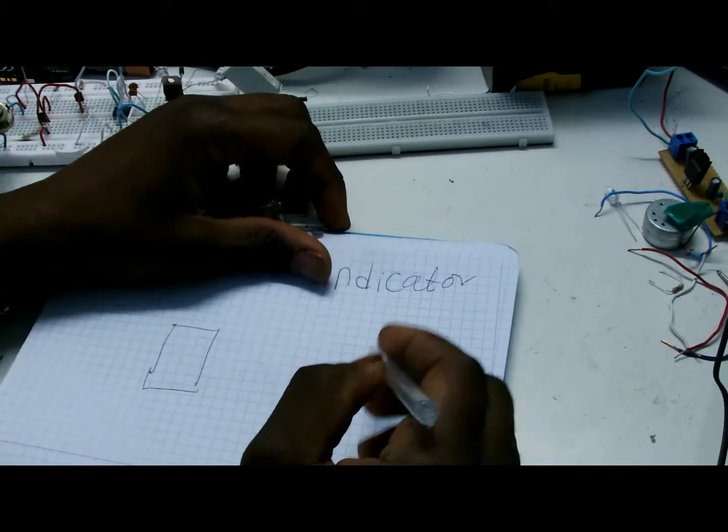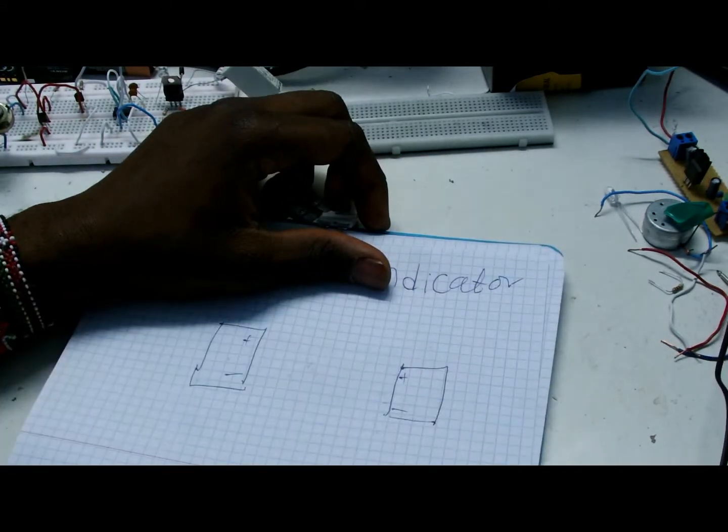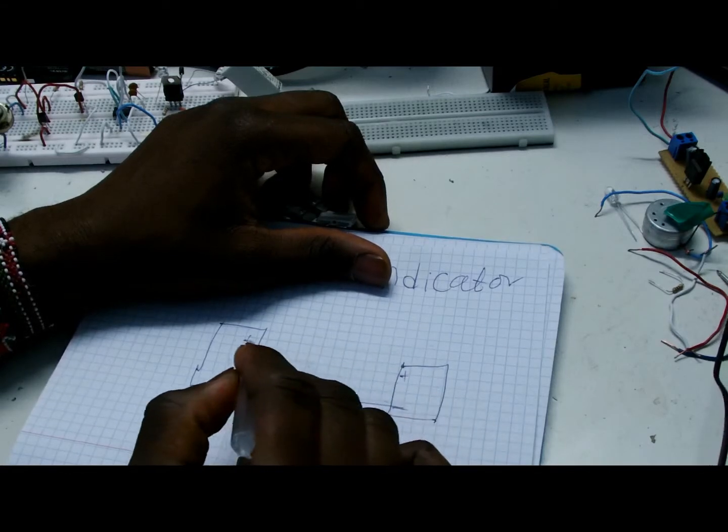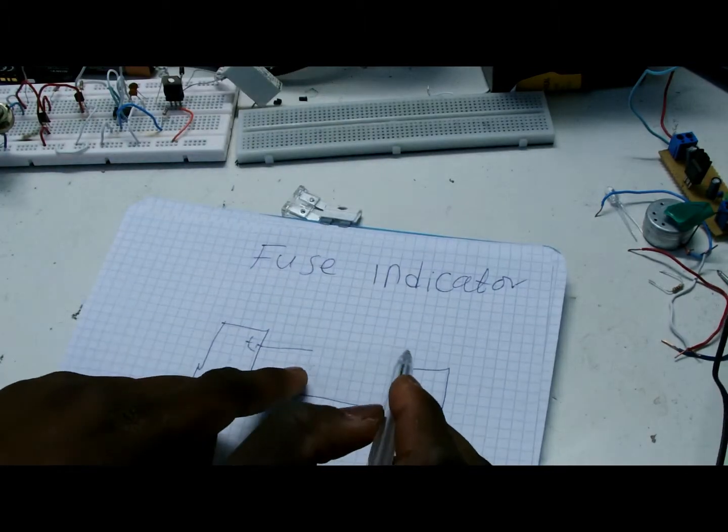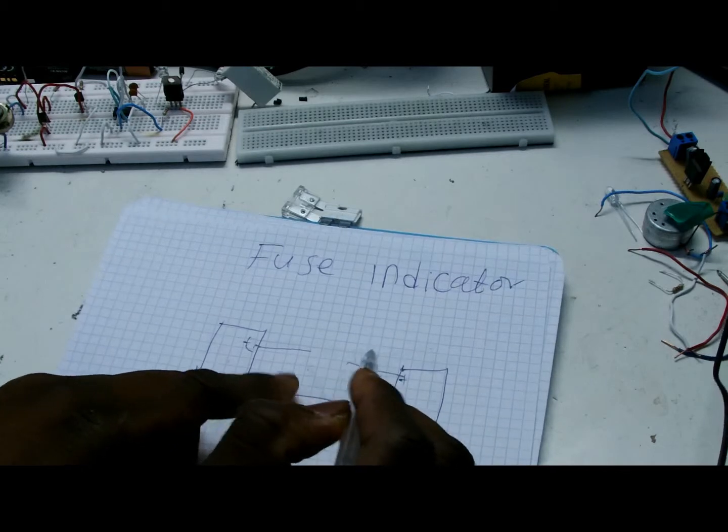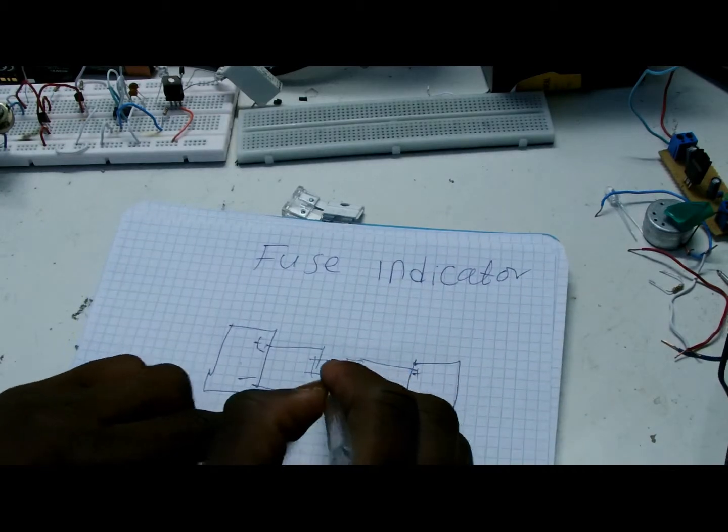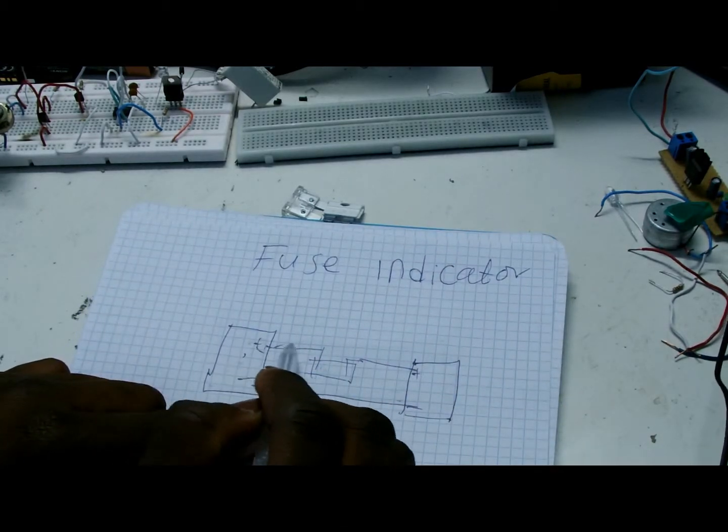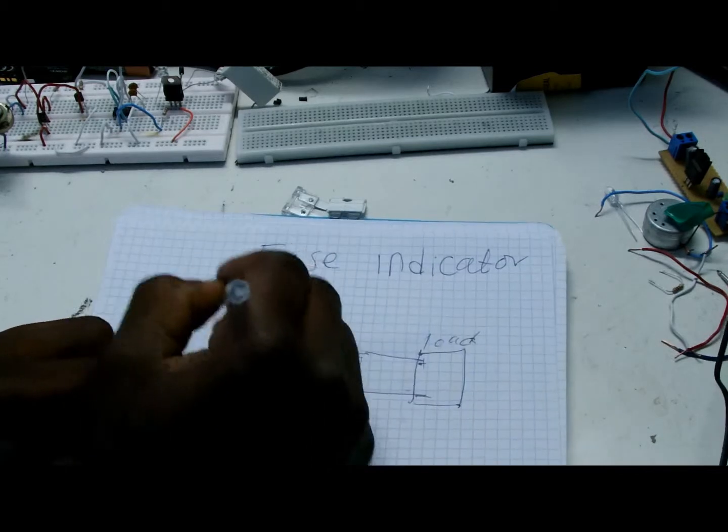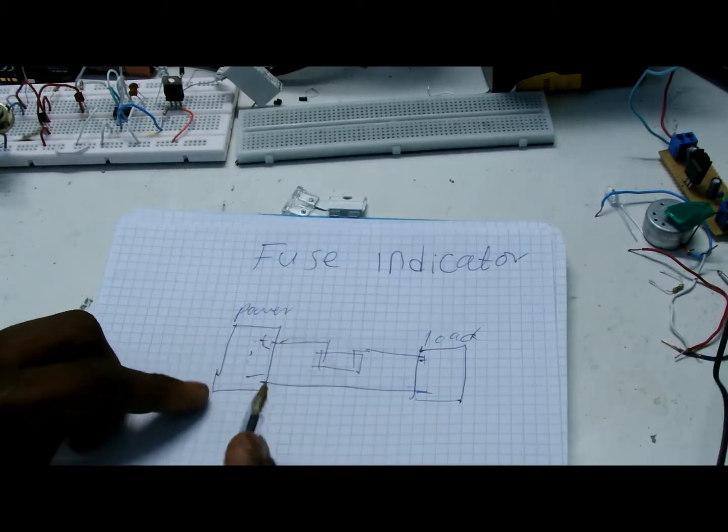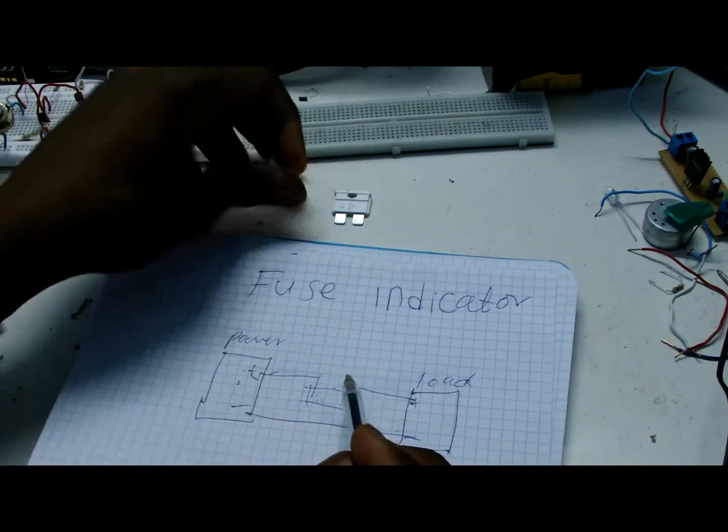We always have power and our load. We have a positive terminal and negative. A negative wire is always connected to the load, right? And then for the positive terminal wire from the load, it's broken down with the fuse. So that means our current flows from the power all the way through the fuse to our load.